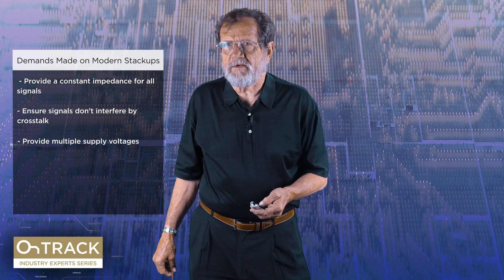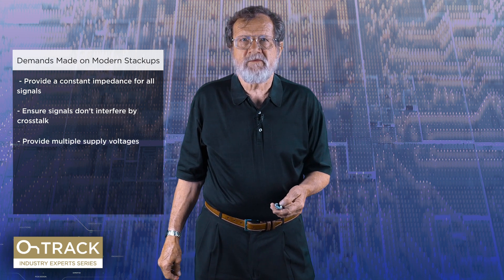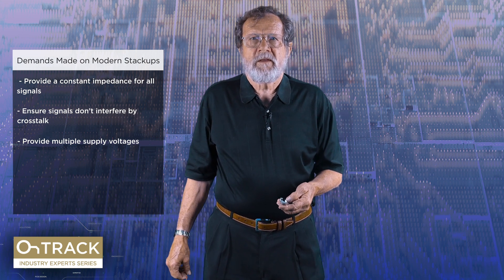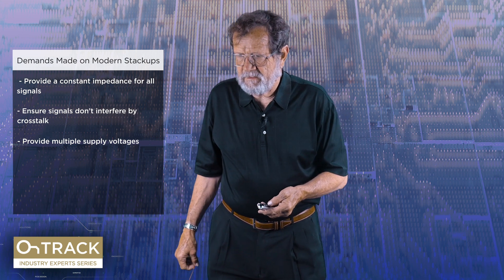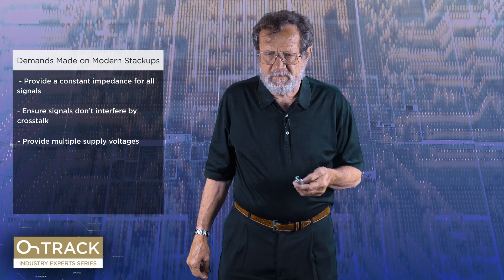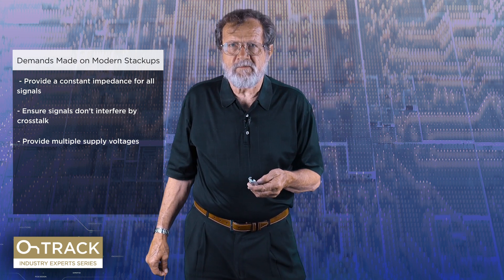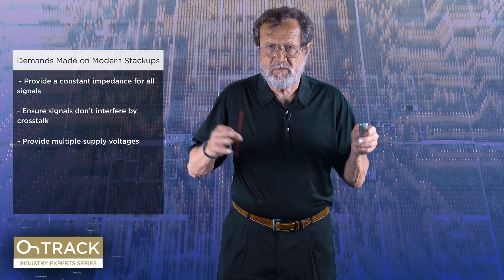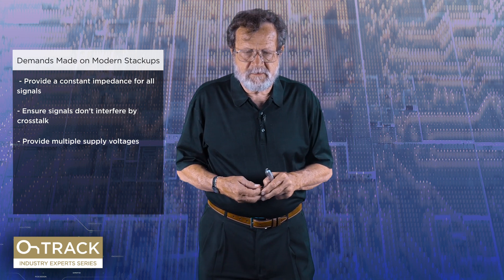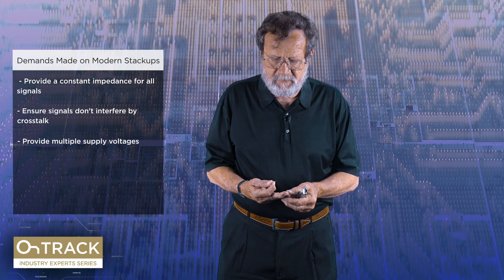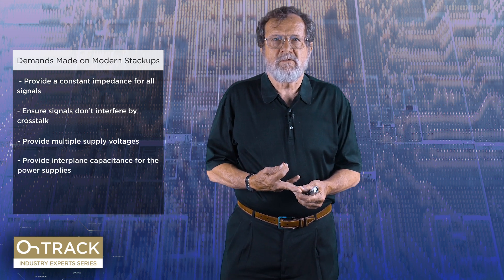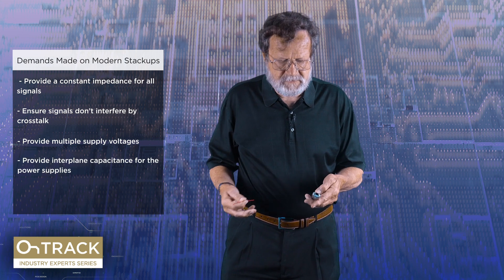My last design had 29 supply voltages in one board. We will see that at the edge rates we are going at these days, the discrete capacitors that one puts on a board are too slow to support the fast edges, and so we'll wind up having to build a plane capacitor in each power plane pair to supply those fast transients.